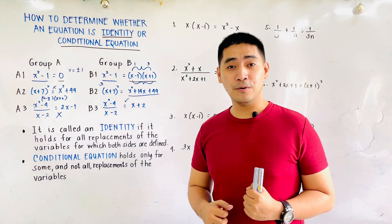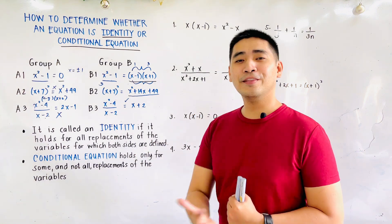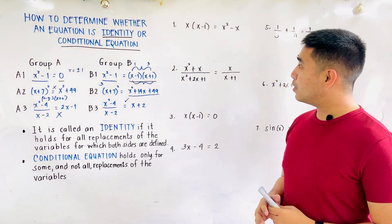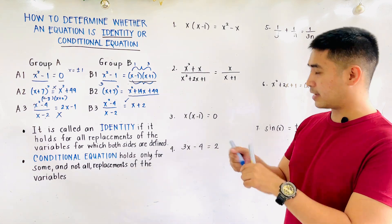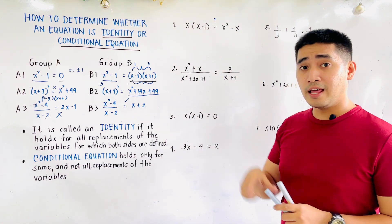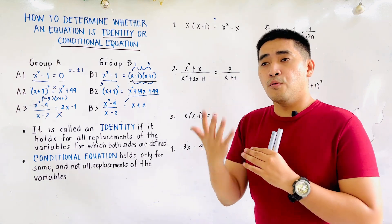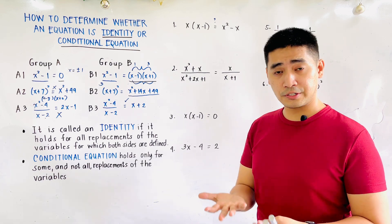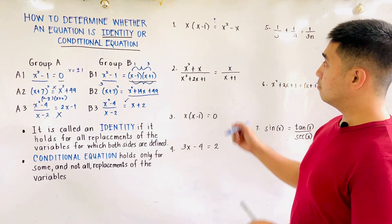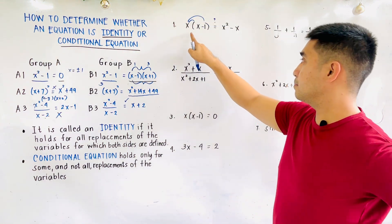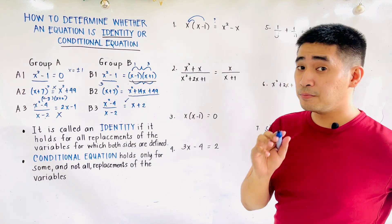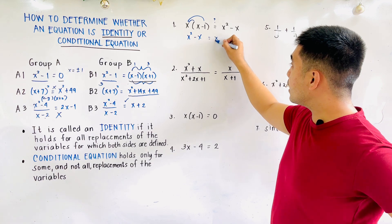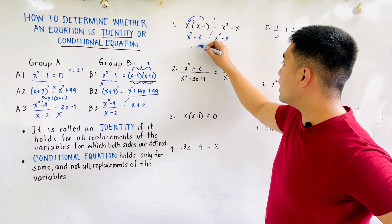Let's now have different examples to determine whether our given is an identity or a conditional equation. Number one: x times the quantity x minus 1 is equal to x squared minus x. Is this an identity or a conditional equation? To find out, we could distribute, factor, use difference of squares, or use addition or subtraction. Let's distribute the left side. x times x is x squared; x times negative 1 is negative x. Is x squared minus x equal to x squared minus x? Yes. Therefore, it is an identity.